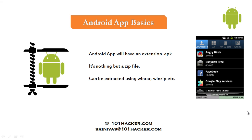Every single Android app that we download will have an extension .apk. If you take Angry Birds, or BusyBox, or Facebook app, any app that you download from the internet or Android market, it will have the extension .apk. This .apk file is nothing but a compressed zip file.